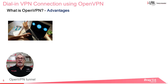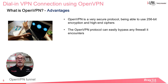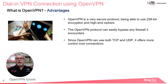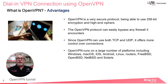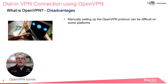On the plus side, OpenVPN is a very secure protocol, being able to use 256-bit encryption keys and high-end ciphers. It can get through NAT and firewalls, supports both TCP and UDP offering more control over connections, is supported on a large number of platforms, and has support for perfect forward secrecy. On the downside, setting up an OpenVPN connection can be a bit of a headache, but DrayTek have made the process fairly easy once you know the steps involved.